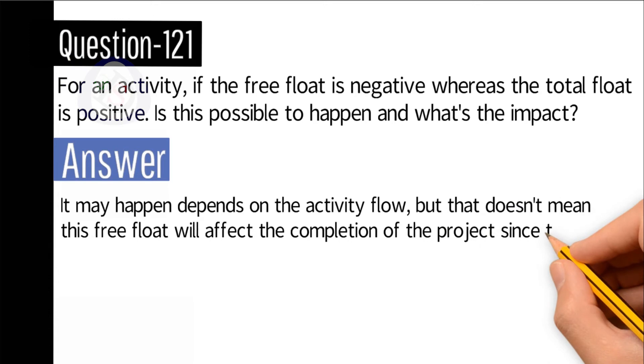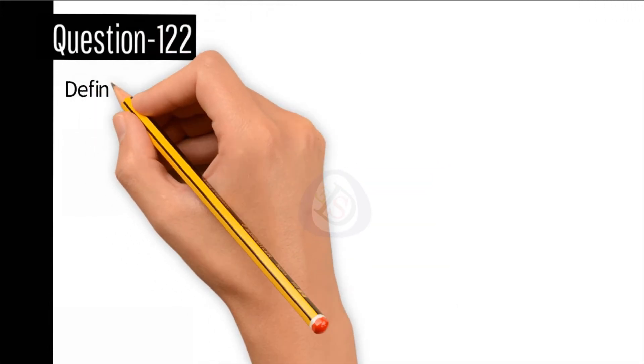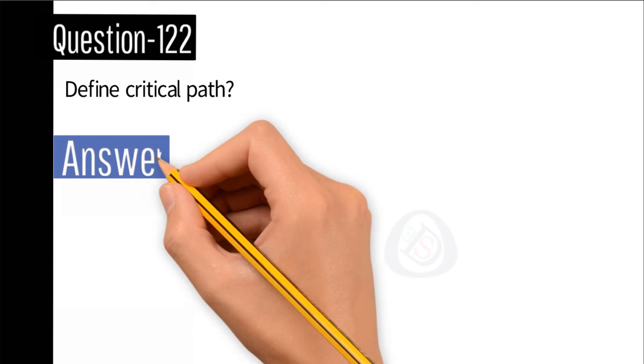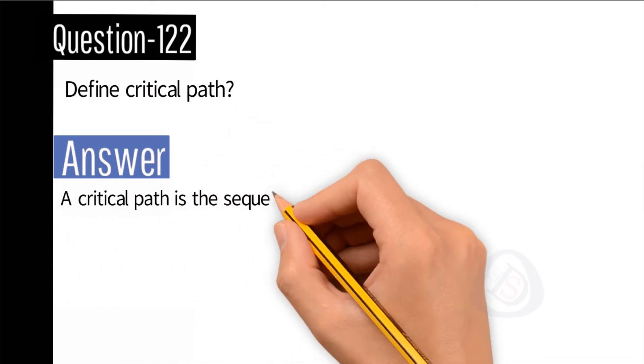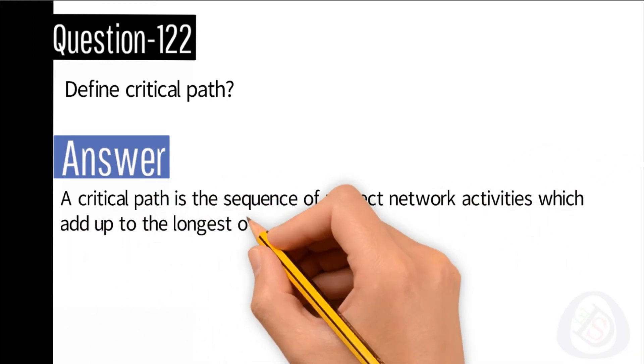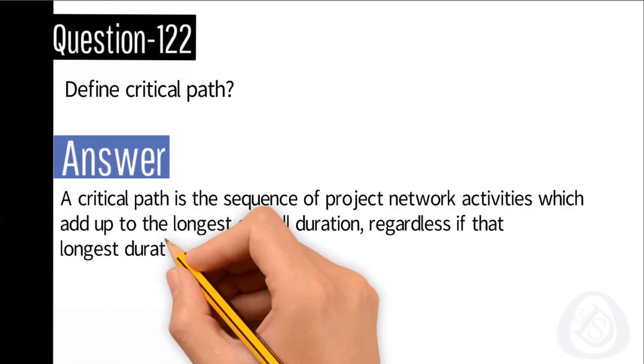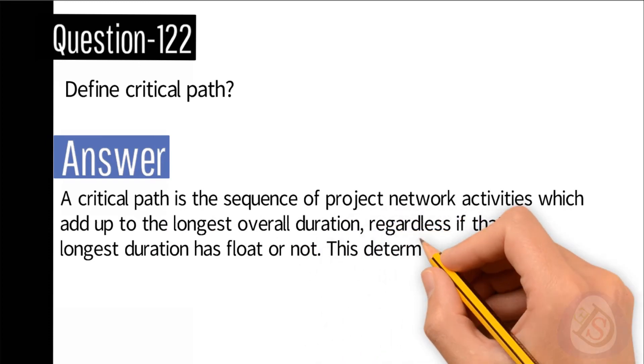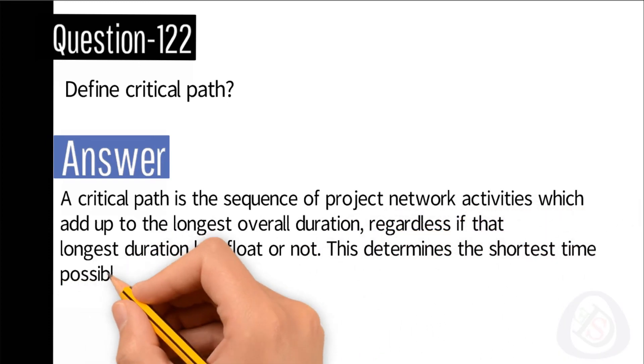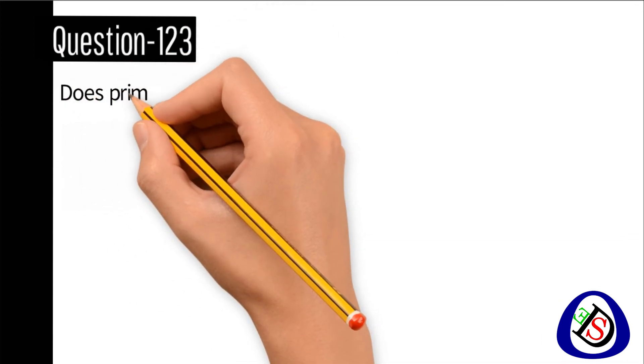Question number 122: Define critical path. Answer: A critical path is a sequence of project network activities which add up to the longest overall duration, regardless if that longest duration has float or not. This determines the shortest time possible to complete the project.